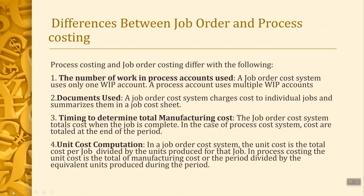Now, in what ways are they different? Process costing and job order costing differ in the following ways. First, the number of work in process inventory accounts used in the process cost system is more — instead of the one used in job order cost system, process costing includes more work in process inventory accounts. Second, the documents used to track costs: for job order costs, we charge costs to individual jobs and summarize them in job order sheets. For the process cost system, it summarizes costs in a production cost report for each department, and no job cost sheets are used.